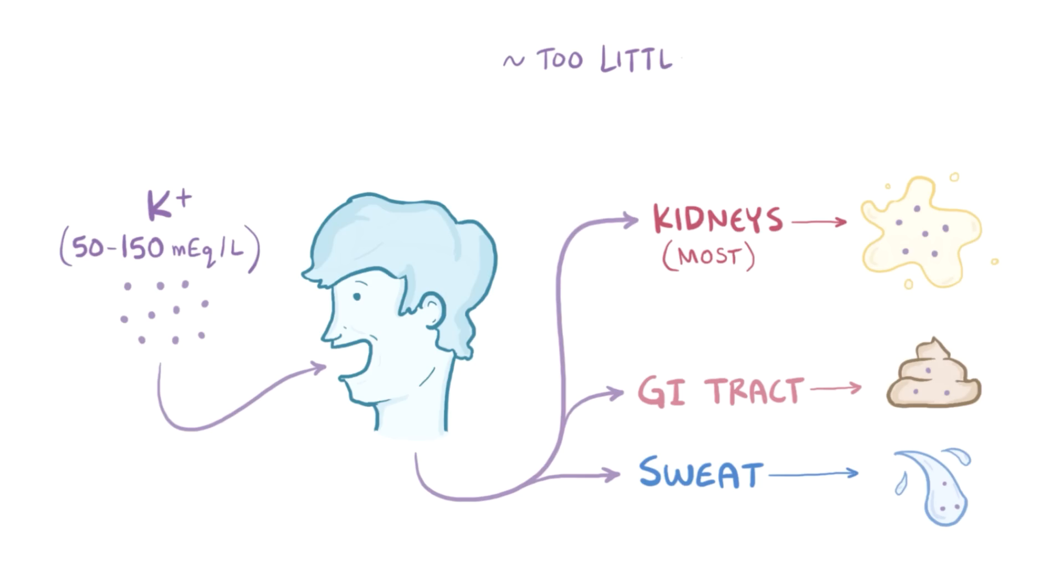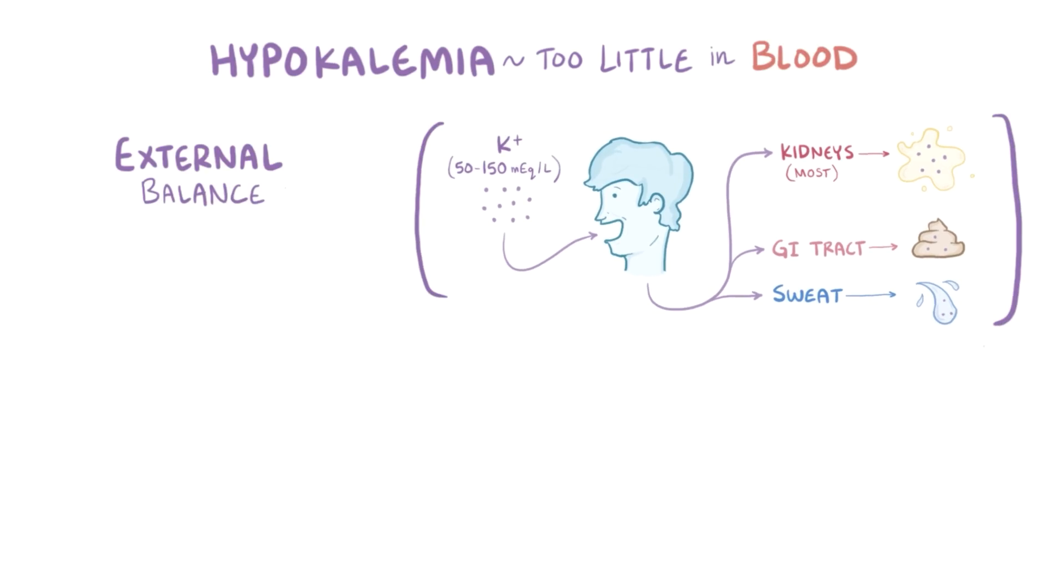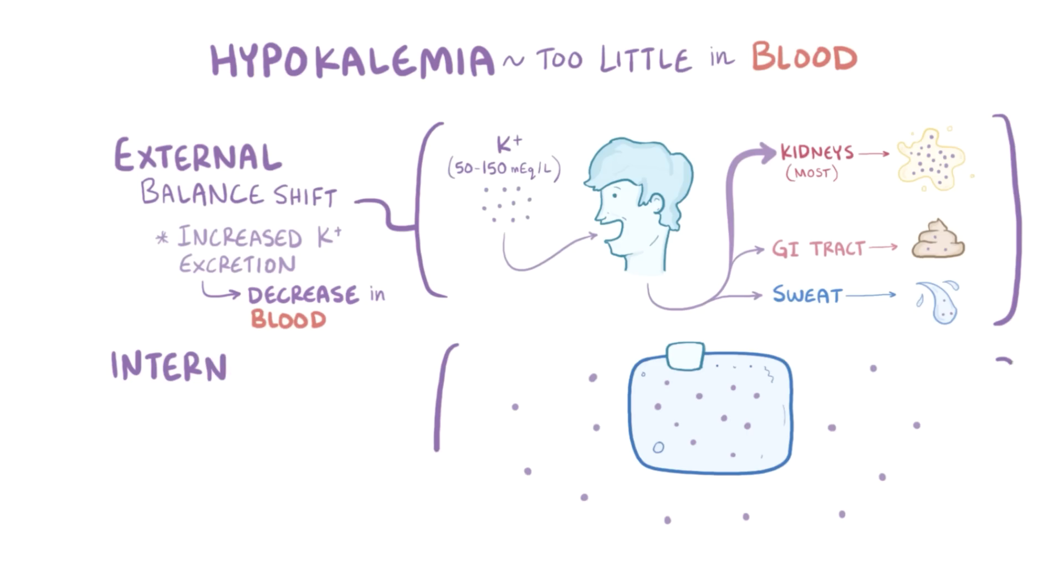So, in order for there to be too little potassium in the blood, or hypokalemia, there are two possibilities. The first is an external balance shift, most often caused by an increase in potassium excretion in the kidneys, which lowers the level of potassium in the blood. And the second is an internal balance shift, where potassium moves into cells from the interstitium and blood.